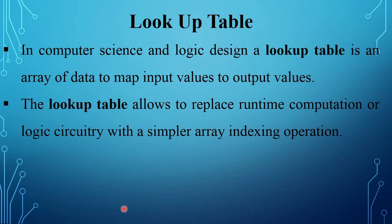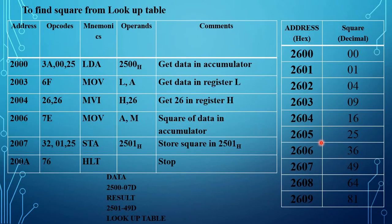A lookup table is an array of data used to map input values to output values. It allows replacing runtime computation or logic circuitry with a simpler array indexing operation. For example, to find a square value from a lookup table, the starting address is 2600 to 2609, and each address contains one data value.